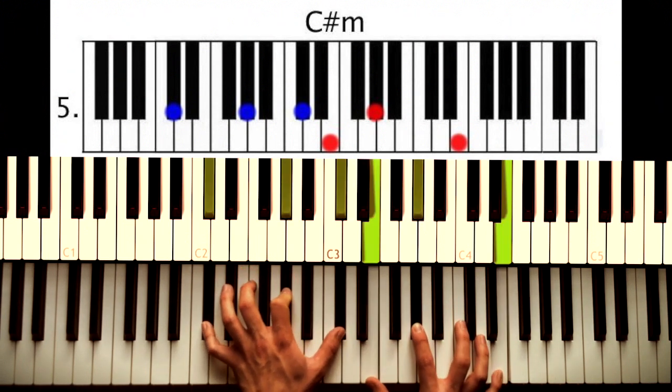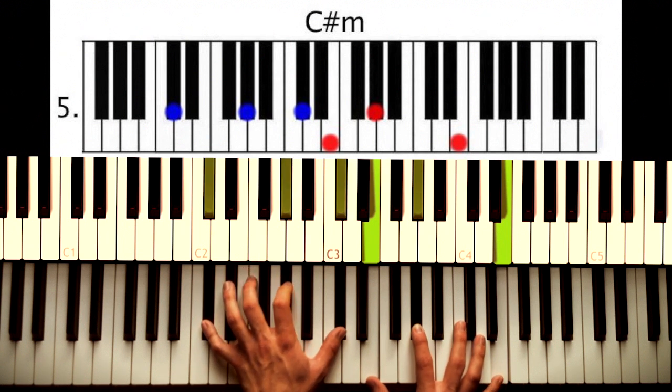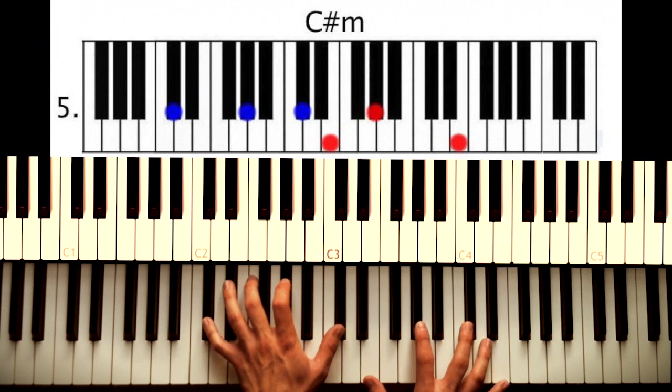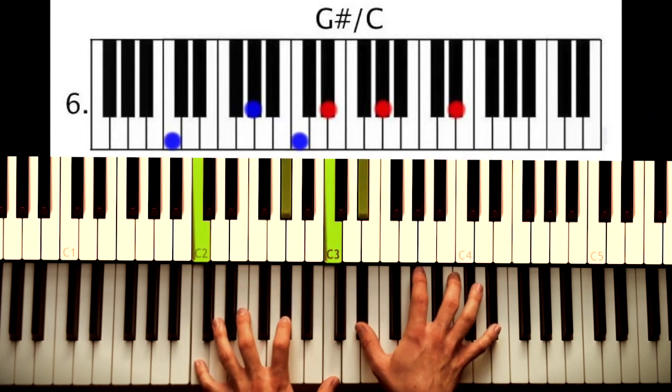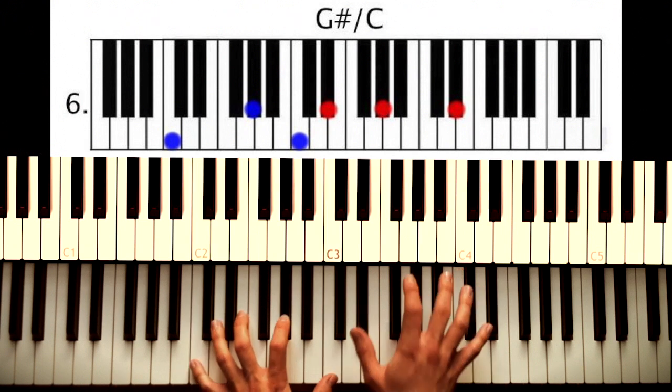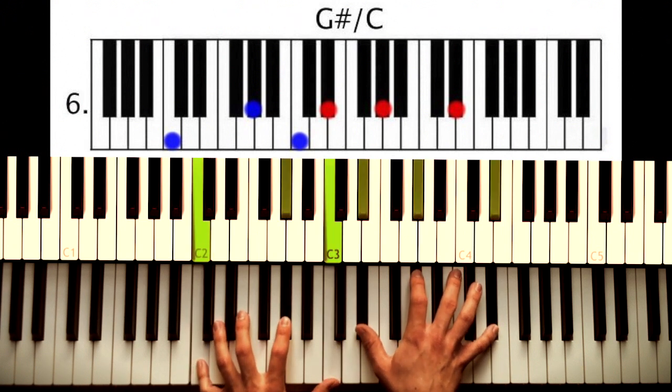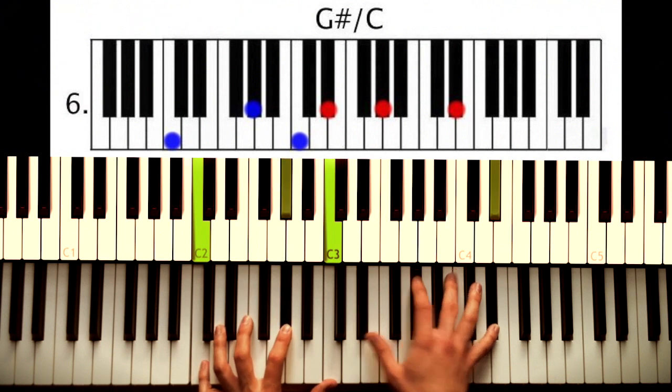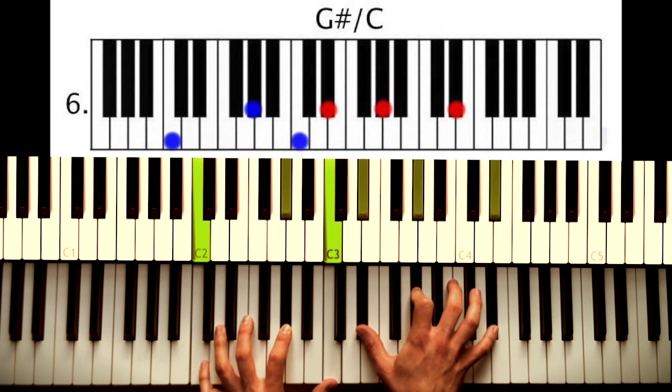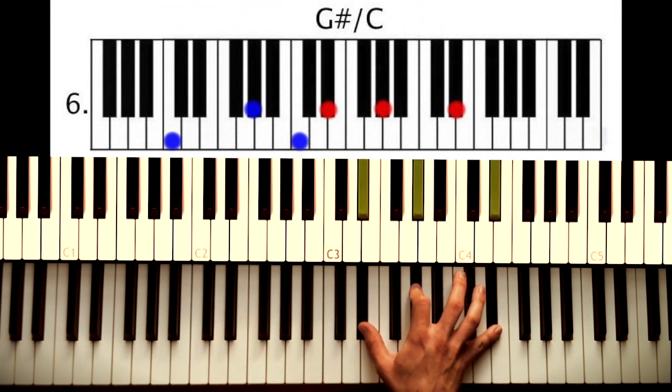Next chord is a C sharp minor. C sharp's in your left hand, G sharp over here. Right hand plays E octaves with a G sharp. Next chord is an A flat chord or G sharp, whatever. I'll call it A flat now. A flat over C. That is C's in your left hand and an A flat over here. Right hand: E flat, A flat, E flat. E flat octaves.